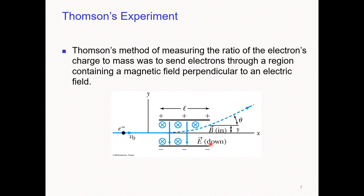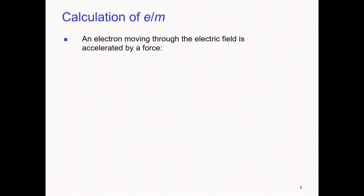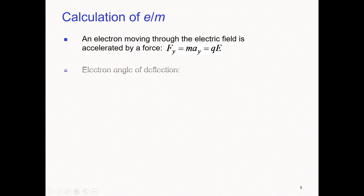The setup is shown in the figure. The electric field direction is downward and the magnetic field direction is into the paper and screen. To calculate the e/m ratio, Thomson found that electrons moving through the electric field are accelerated by a force. That force is equal to ma, and the electric force is equal to qE.